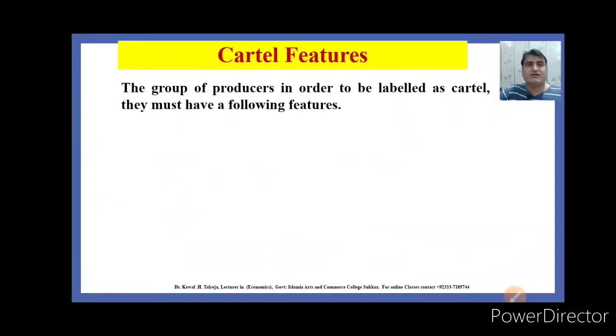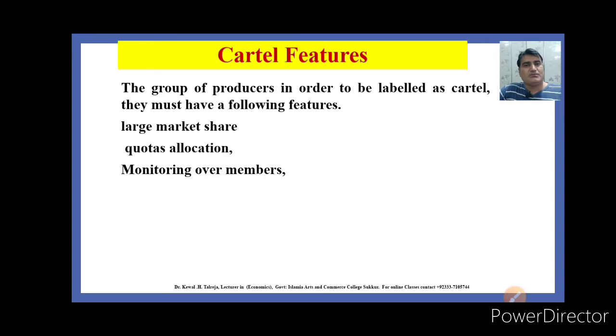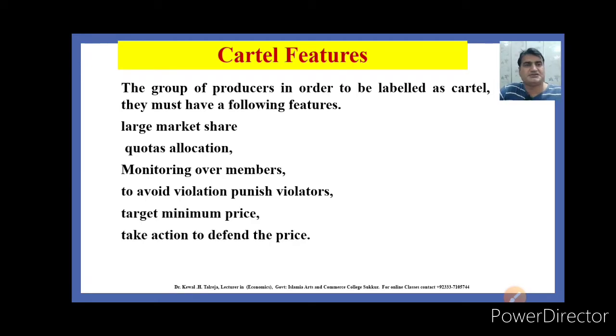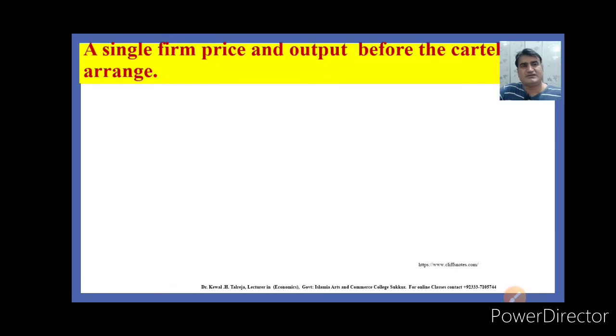What are the features of cartel? A group of producers, in order to be labeled as cartel, must have the following features: large market share before forming the cartel, quota allocation in cartel, monitoring over members to avoid violations and punish violators, target minimum price, and take action to defend the price.